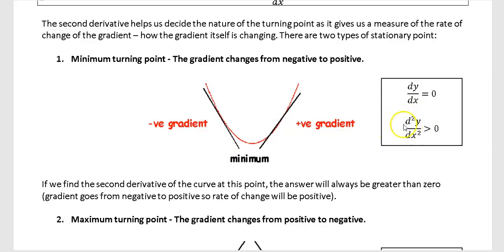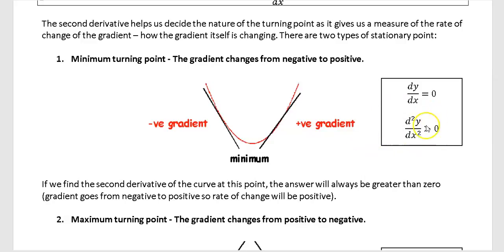If you differentiate again to get d²y/dx², at the minimum point d²y/dx² will be greater than zero. That's one of those counterintuitive things in mathematics — it's a minimum but the second derivative is actually greater than zero.